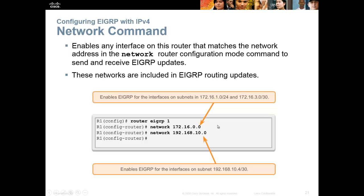That's where people always get confused — they think the network statement describes what networks to advertise, but that's not the case. The network statement just says if any interfaces match this, advertise the networks on those interfaces. That's why sometimes you can get away with fewer network statements than interfaces. If I had 192.16.81, 192.16.82, and 192.16.83 interfaces, I could do one network statement — 192.16.8 — and that would match all three interfaces and advertise all three networks.